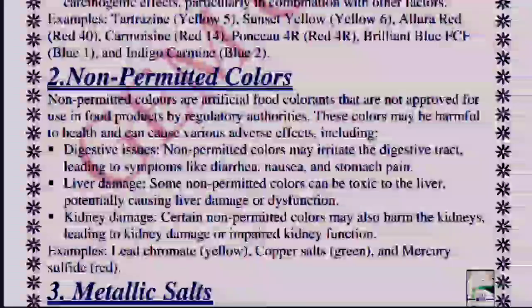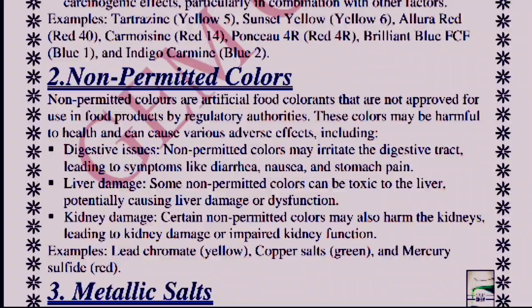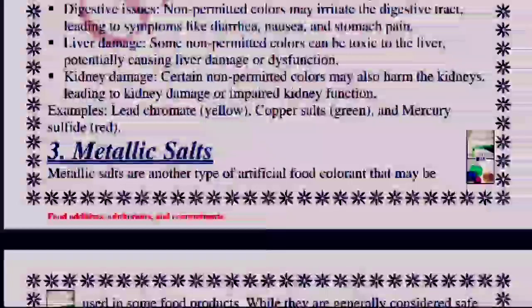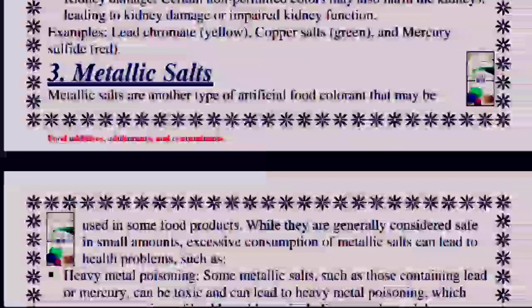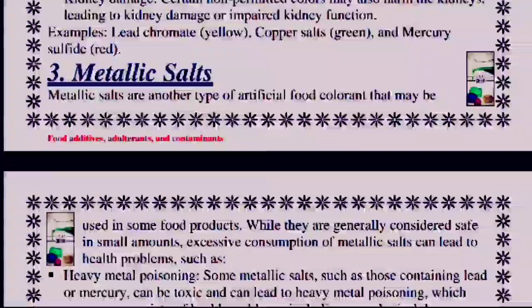Non-permitted colors are artificial food colorants that are not approved for use in food products by regulatory authorities. Examples include lead chromate, copper salts, and mercury sulfide. Next, we have metallic salts, which are another type of artificial food colorant that may be used in some food products.